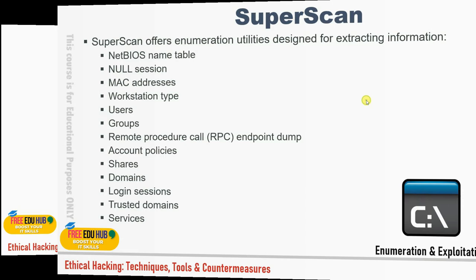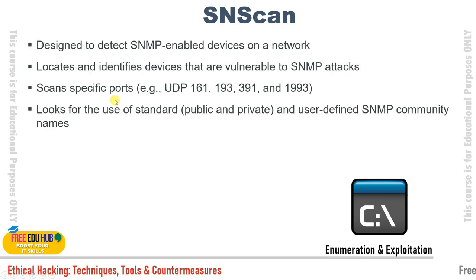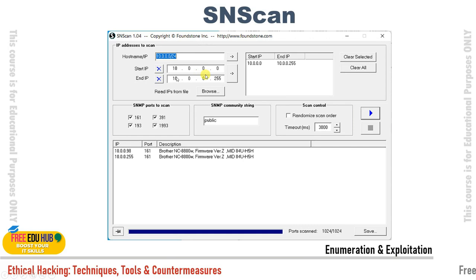Another tool is designed to detect SNMP-enabled devices and locate devices vulnerable to SNMP attacks. It scans specific ports such as UDP 161, 193, and 391, looks for use of standard public and private community strings, and supports user-defined SNMP queries. You can add a complete subnet and search for IP addresses to scan on the network.